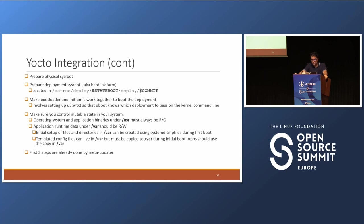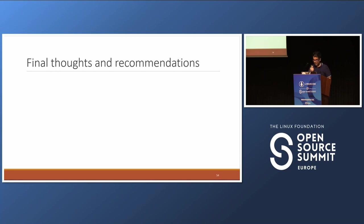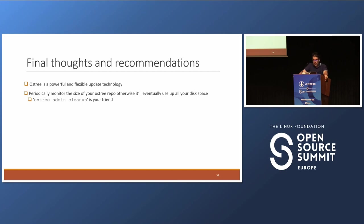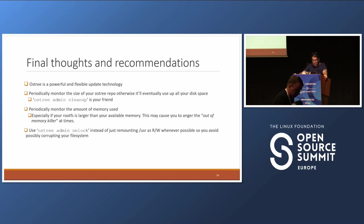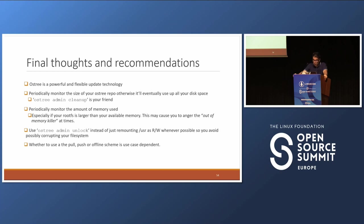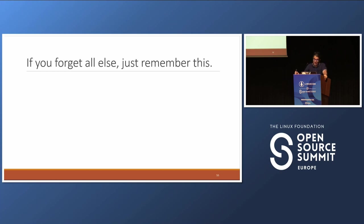Some final thoughts and recommendations. OSTree is powerful and flexible update technology. Periodically monitor the size of your OSTree repo; otherwise it will eventually use up all your disk space — OSTree admin cleanup is your friend. Periodically monitor the amount of memory used, especially if your rootFS is larger than your available memory, as this may cause you to anger the out-of-memory killer. Use OSTree admin unlock instead of just remounting slash usr as read-write whenever possible to avoid corrupting your file system. Whether to use pull, push, or offline schemes is use-case dependent. If you forget all else, please just remember this: mutability is the root of all evil. Choose immutable file systems whenever possible.